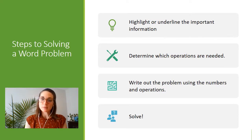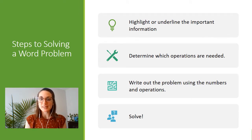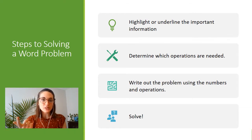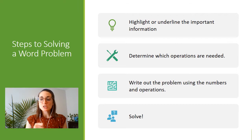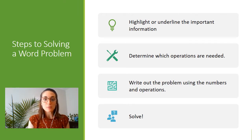So when we're solving a word problem, there are four steps that we're going to follow. The first one is to highlight or underline any important information that's in the problem — we're looking for keywords, the numbers that we need, all of that. Then we need to determine which operations we need: are we going to add, multiply, subtract, divide? Then we're going to write out the problem using the numbers and the operations, and then we will solve it.